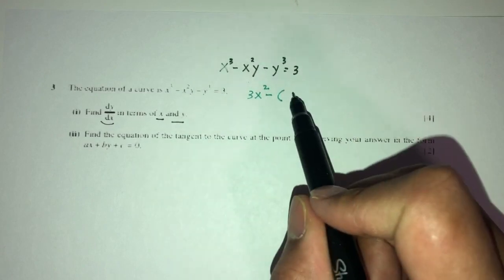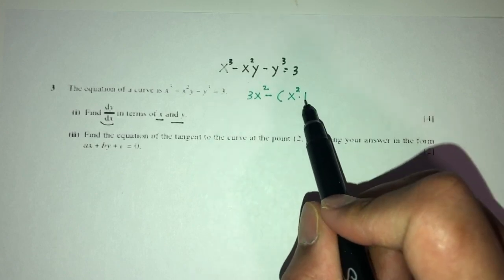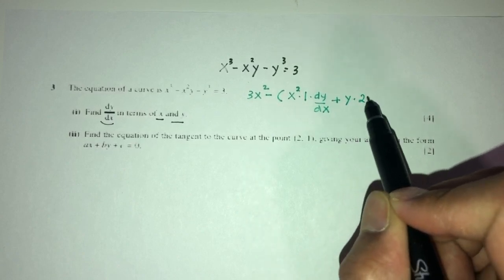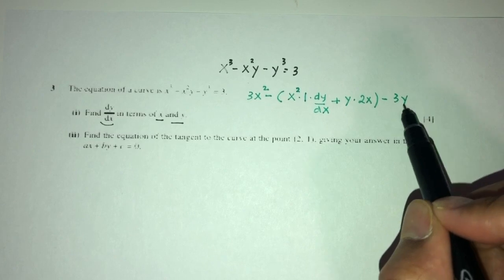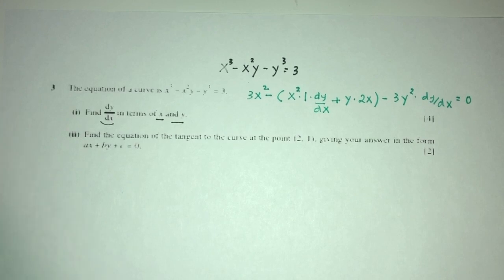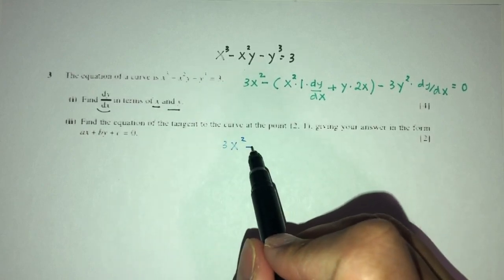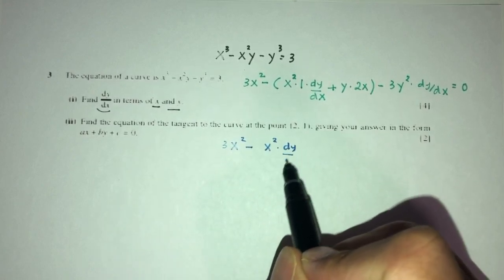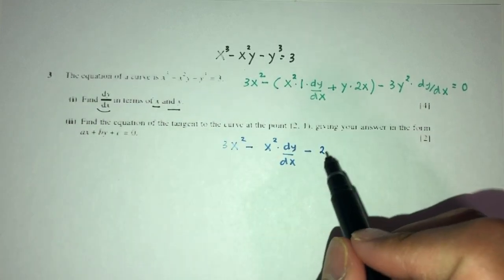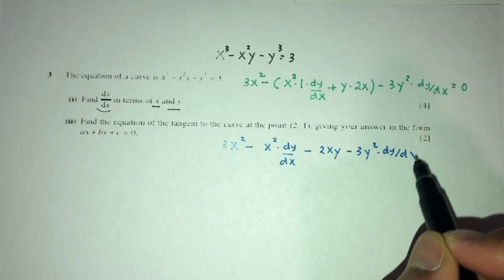Using the product rule on x squared y: leave x squared, differentiate y to get 1 times dy/dx, plus y times 2x. Then for minus y cubed, differentiate to get minus 3y squared times dy/dx. The whole expression equals 0. Expanding and applying the minus sign from the bracket gives: 3x squared minus x squared dy/dx minus 2xy minus 3y squared dy/dx equals 0.